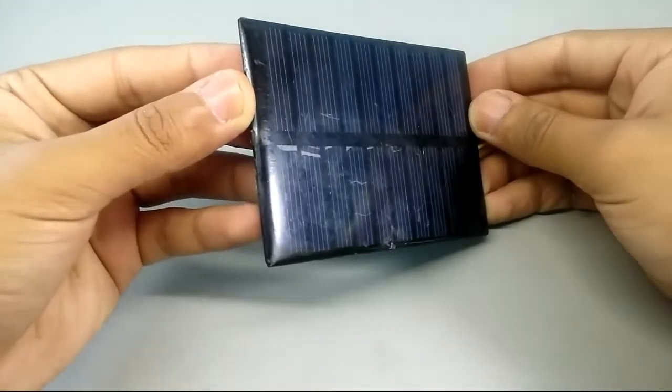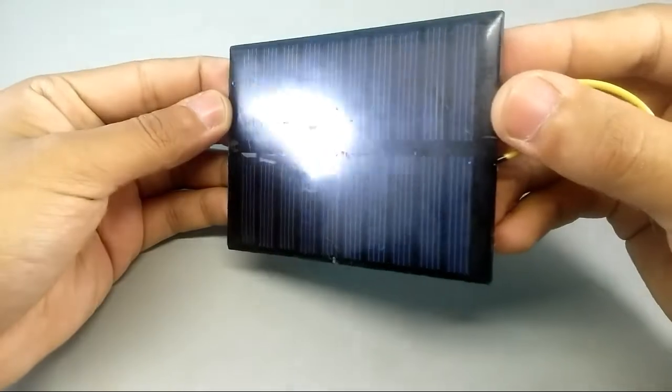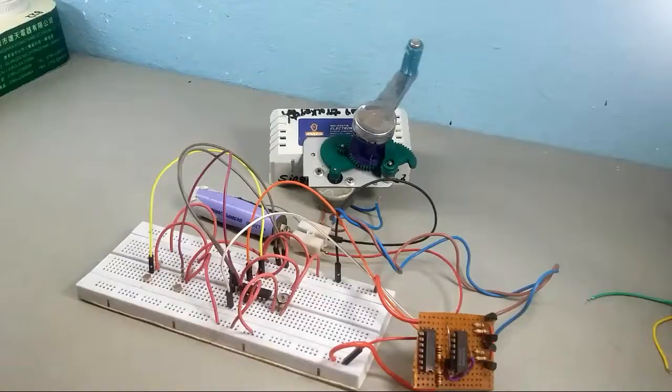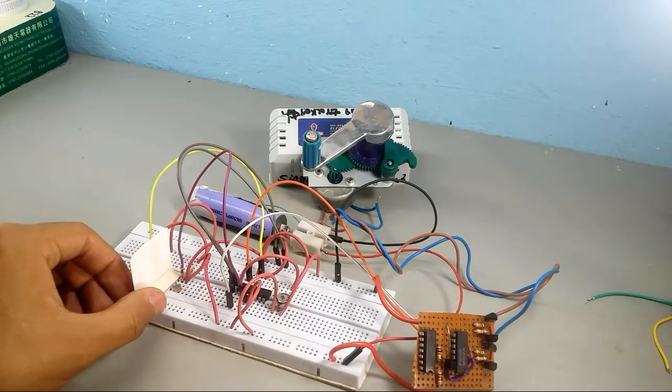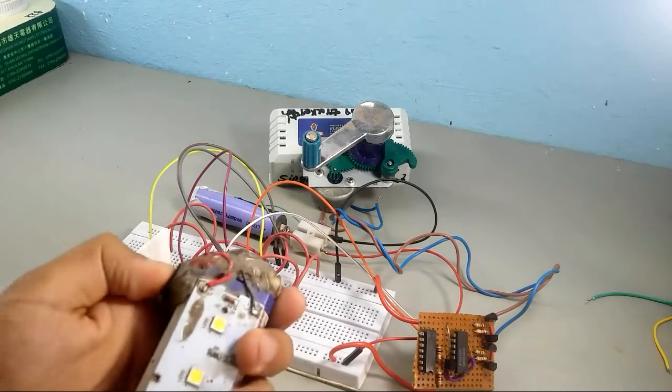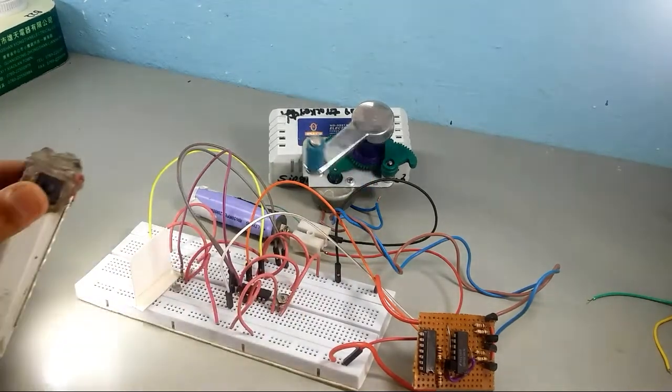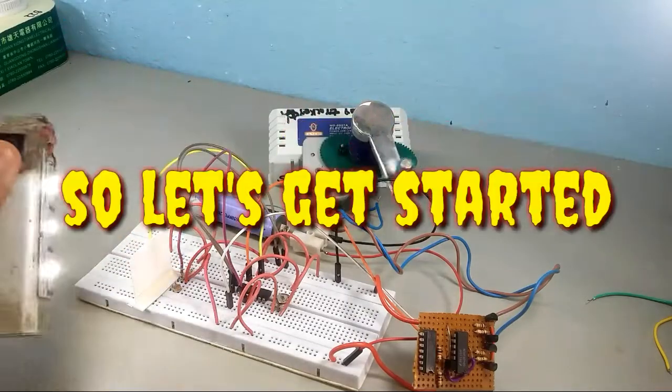So you need a tracker to help rotate the solar cell so that the light is always perpendicular to its surface. Therefore, this video is based upon the construction of a single axis solar tracker that can track pretty much every light source and help it produce maximum output power from the solar cell. So let's get started.